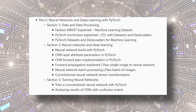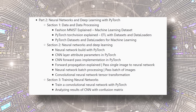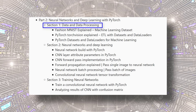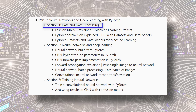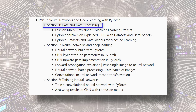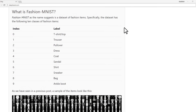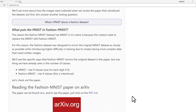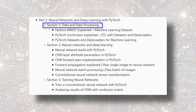Part two of the neural network programming series is where we'll kick off the first deep learning project we'll be building together. Part two is comprised of three sections. The first section will cover data and data processing for deep learning in general and how it relates to our deep learning project. Since tensors are the data structures of deep learning, we'll be using all the knowledge we learned about tensors from part one. We'll introduce the Fashion MNIST dataset that we'll be using to build a convolutional neural network for image classification, and we'll see how PyTorch datasets and data loaders are used to streamline the data pre-processing and training process.